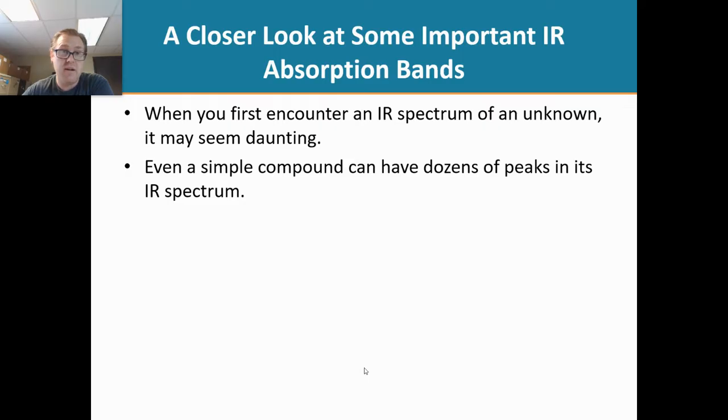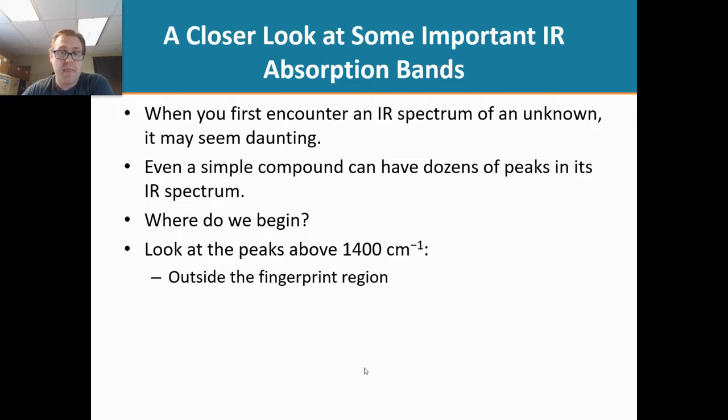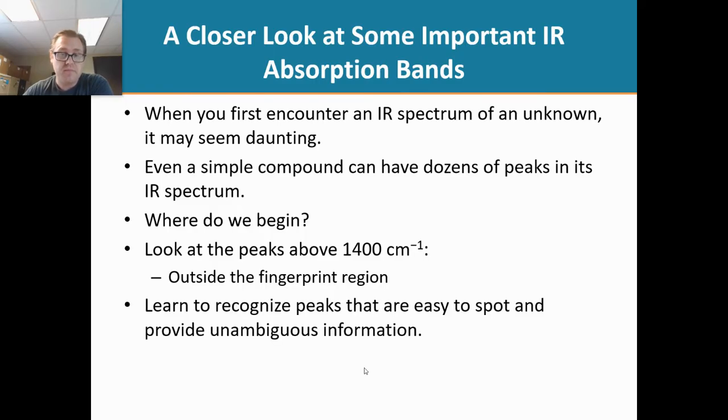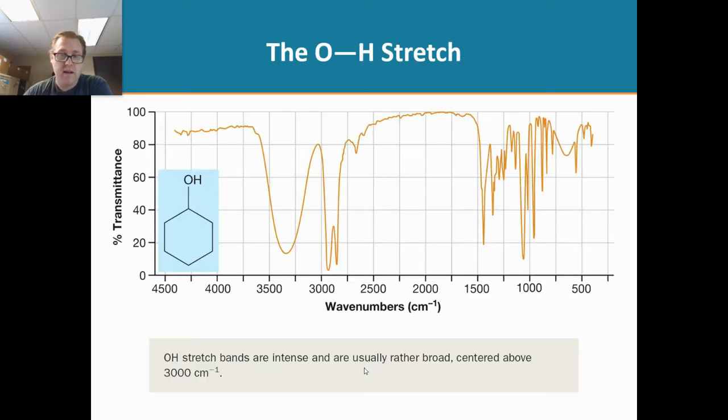So where do we begin? Just ignore everything from 1400 to 500 inverse centimeters. Don't worry about it. Then you learn to recognize the easy ones. The reason why you want to go for those is because they are typically unambiguous. You know for a fact that that peak represents a certain functional group.